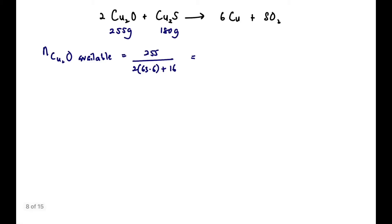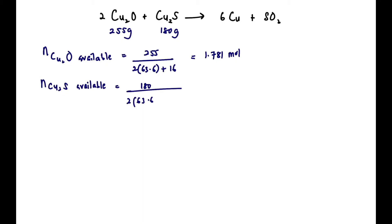Mole Cu₂O available = 255 g ÷ molar mass of Cu₂O = 1.781 mol. For Cu₂S, mole available = 180 g ÷ molar mass of Cu₂S = 1.2994 mol.